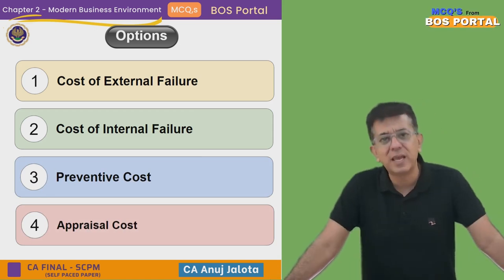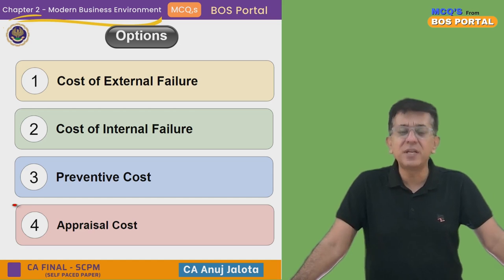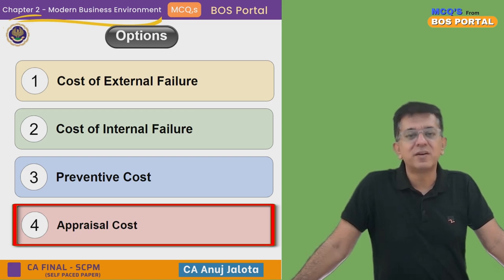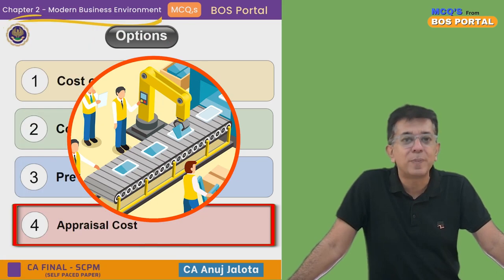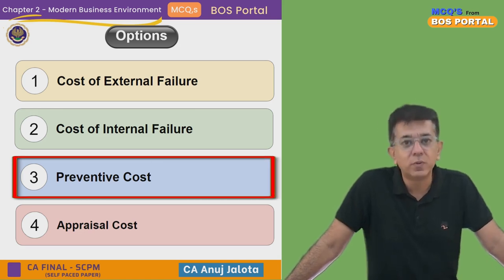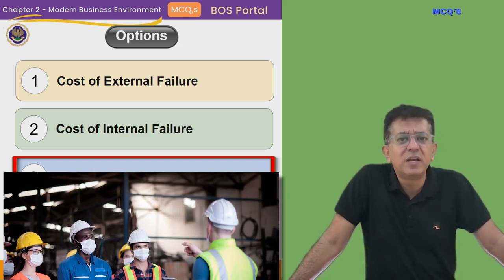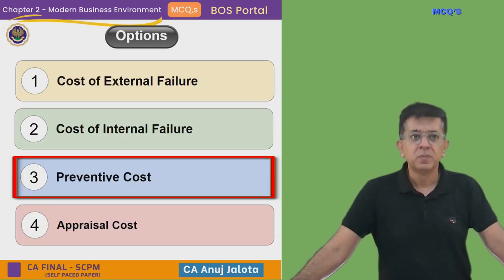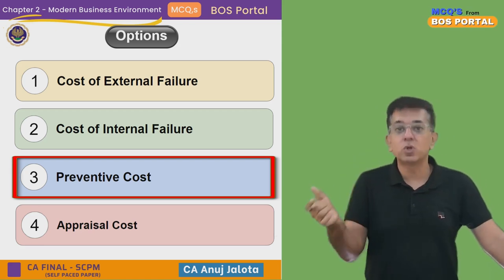Let me describe all these costs, starting from the last one. Appraisal costs are part of the cost of good quality — these are costs incurred once a product is produced. For example, once a product is produced, we get it inspected — that is appraisal cost. Preventive costs are also part of good quality — these are costs that help you prevent bad quality. For example, giving training to workers helps you prevent defective units. So the third and fourth are part of cost of good quality — you need to spend more on these costs.